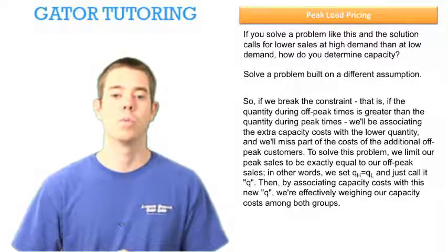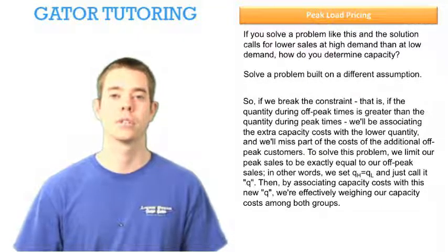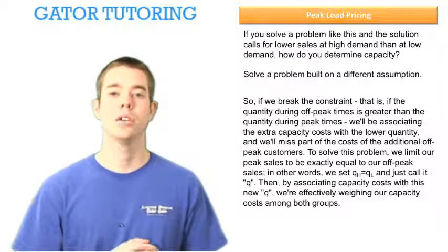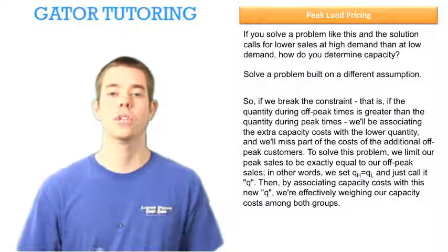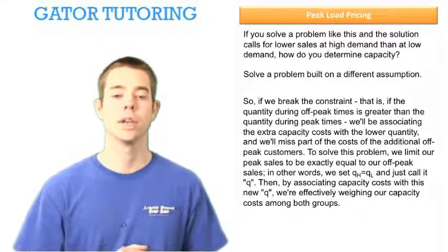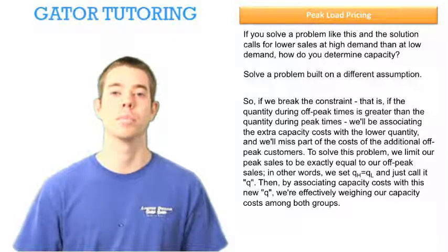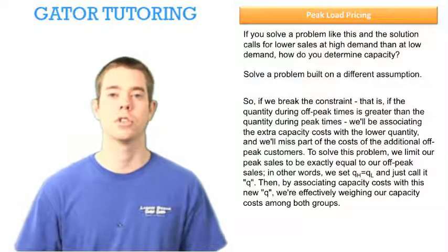To solve this problem, we have to limit our peak sales to be exactly equal to our off peak sales. In other words, we set Q_H equal to Q_L, or we can just call it Q and drop the subscript. Then, by associating the capacity cost with this new Q, we're effectively weighing our capacity costs among both groups. So it's kind of like averaging it.